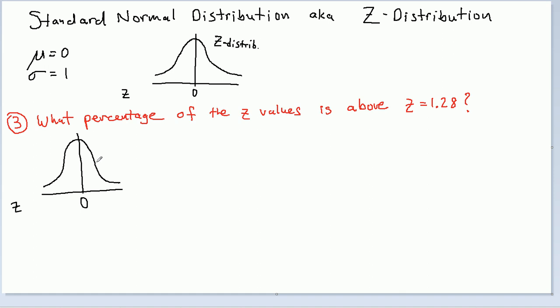The center is 0 because we're looking at the z distribution. Now I want 1.28. Here's 1.28. Definitely somewhere to the right of 0, right? Let me use green now to shade the area that I'm actually interested in. So I want above 1.28. Okay, so here's 1.28, and I want this.